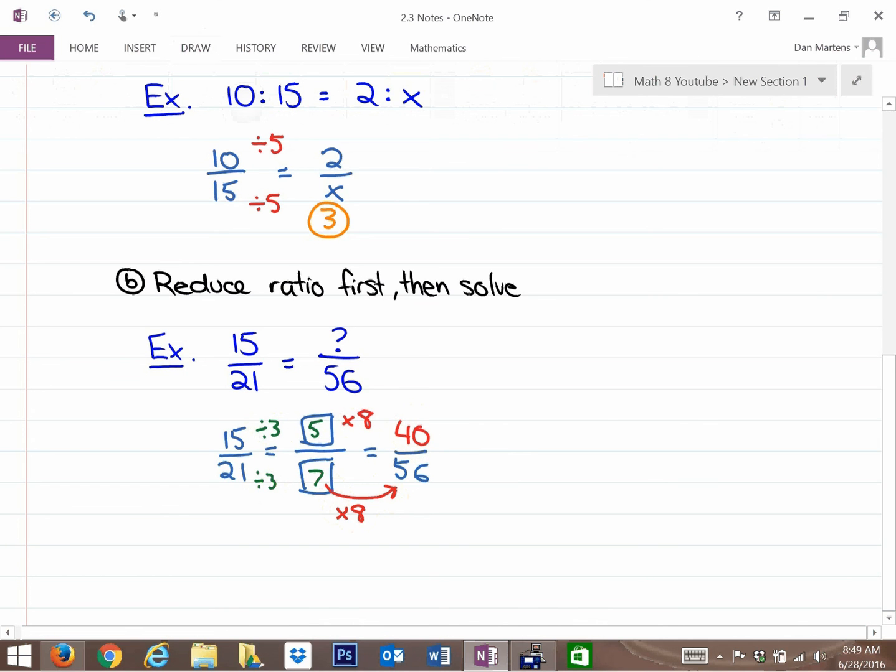Okay? So if you don't have an integer multiplier or divider in order to figure out or solve your proportion, one thing you might want to do is reduce the ratio first, and then solve.